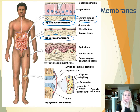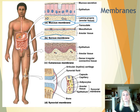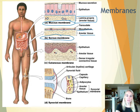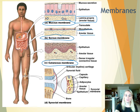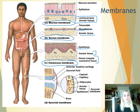Serous membranes line closed cavities. The pericardium, pleural membrane, and peritoneum are examples — simple squamous epithelium sitting on areolar connective tissue. Cutaneous membrane is your skin — a dry membrane that is stratified squamous epithelium sitting on an areolar connective tissue basement membrane, with the dermis being dense irregular connective tissue underneath.